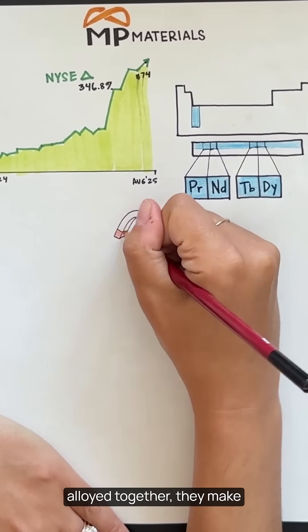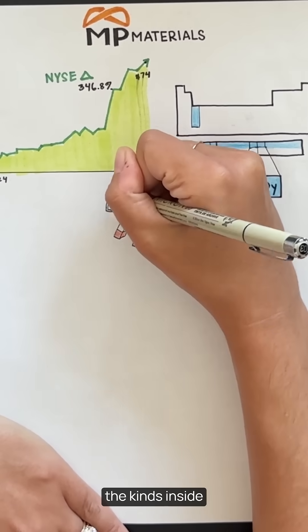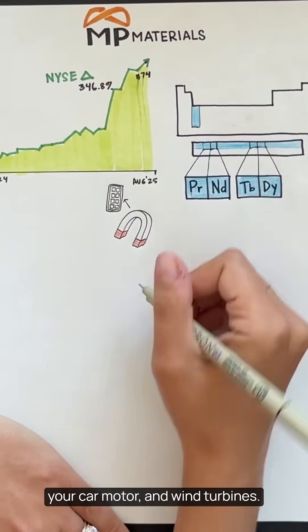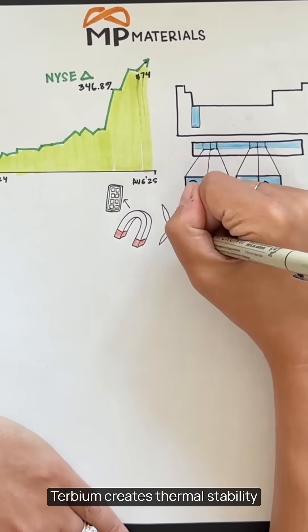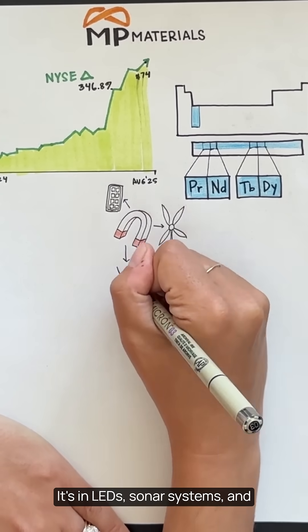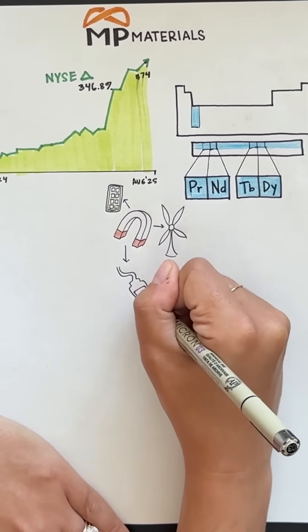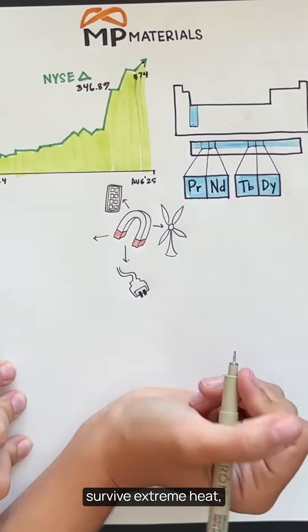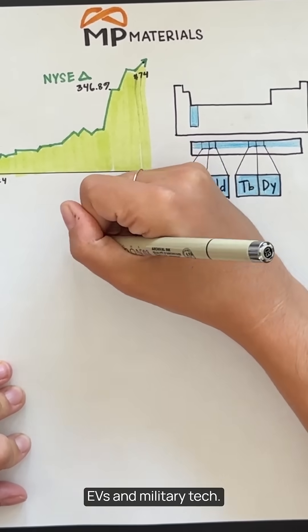When praseodymium and neodymium are alloyed together, they make ultra-strong magnets, the kinds inside your phone speaker, your car motor, and wind turbines. Terbium creates thermal stability and supports magnet performance. It's in LEDs, sonar systems, and smart weapons. High-stakes stuff.